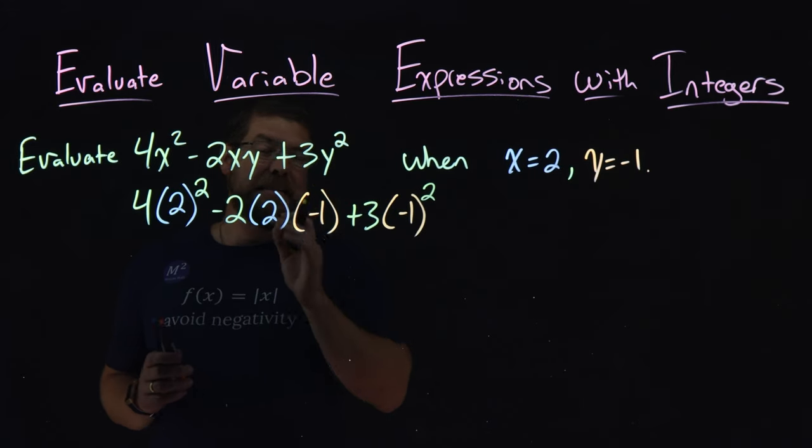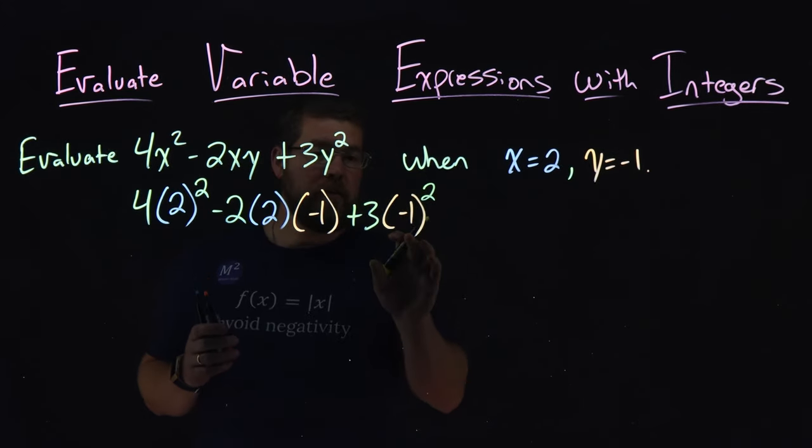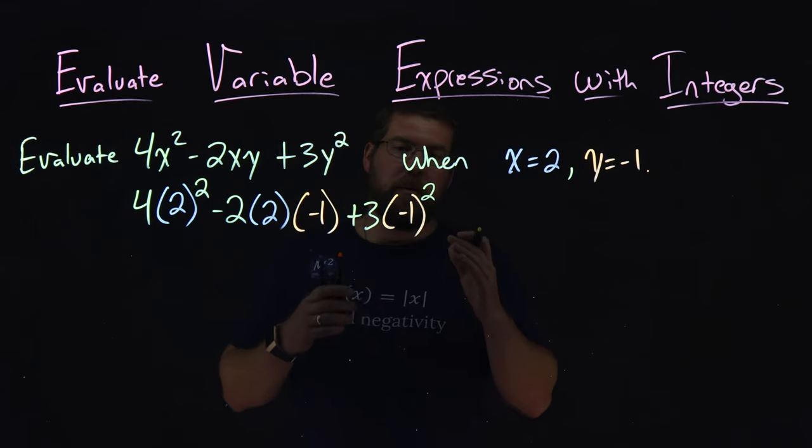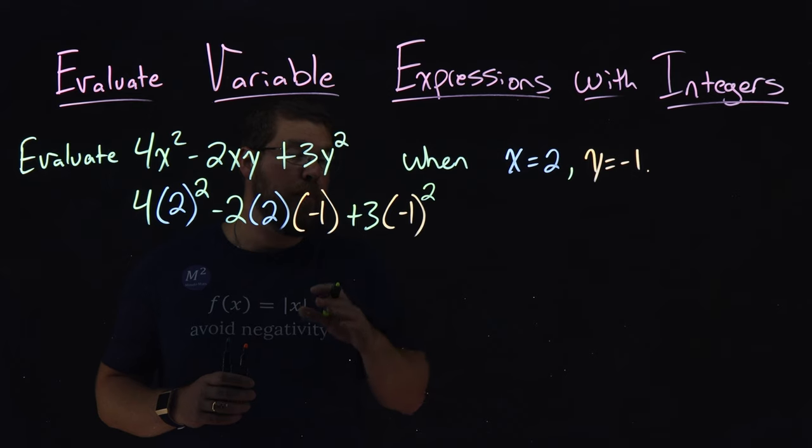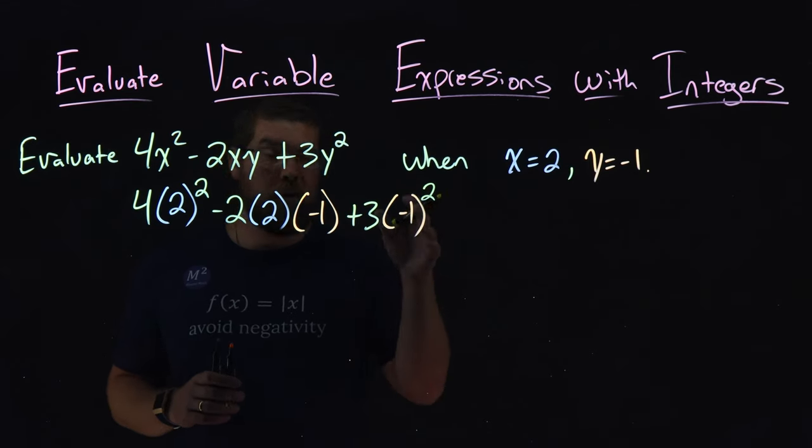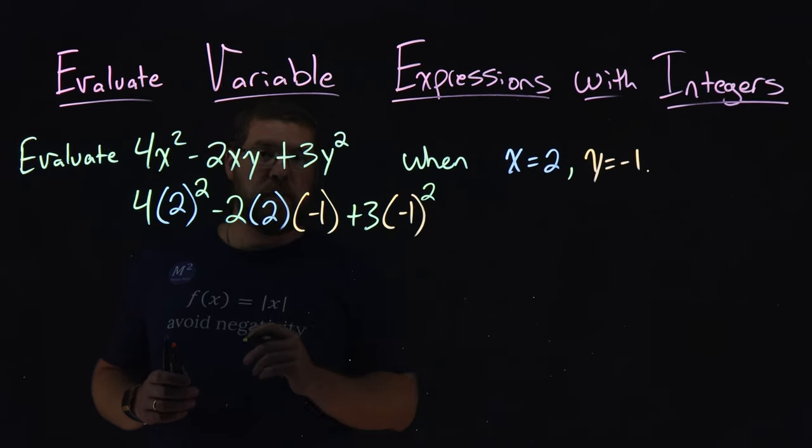Now, from here, we want to simplify this expression using our order of operations. Parentheses is first, but each parenthesis has just a number in it. There's nothing that we can simplify within that parenthesis, so we move on. Exponents. We have two. We have one here and one here, and they're both two. So in the next step, I'm going to deal with both of these exponents, and only that.